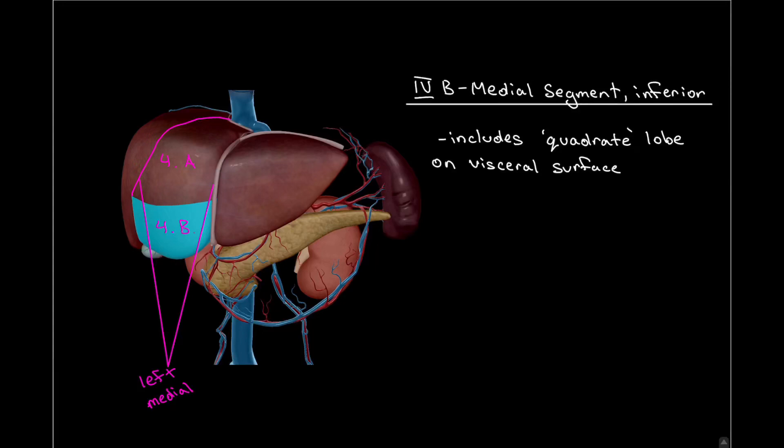Highlighted below is segment four B. It has the same venous drainage. One thing to mention is that it includes the quadrate lobe on its ventral surface.